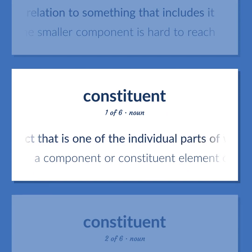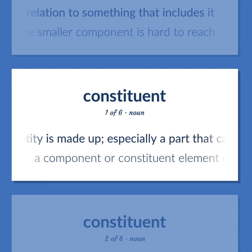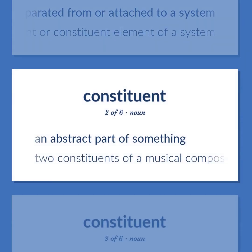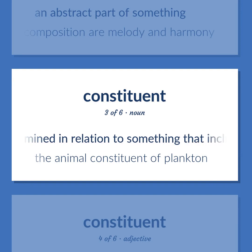An artifact that is one of the individual parts of which a composite entity is made up, especially a part that can be separated from or attached to a system. A component or constituent element of a system. An abstract part of something. Two constituents of a musical composition are melody and harmony. Something determined in relation to something that includes it. The animal constituent of plankton.